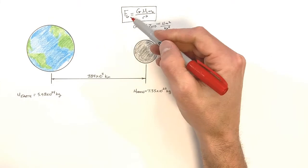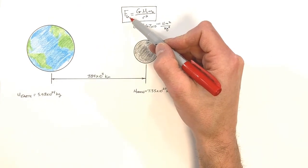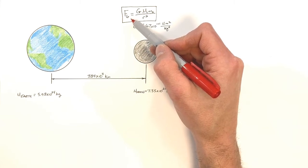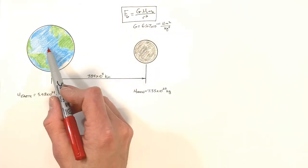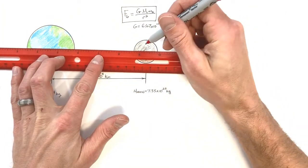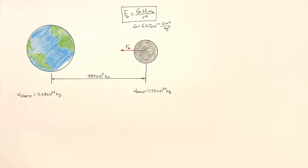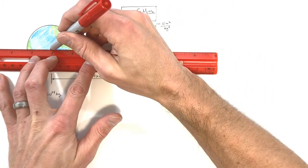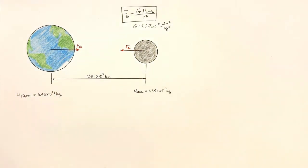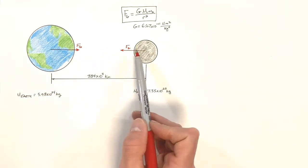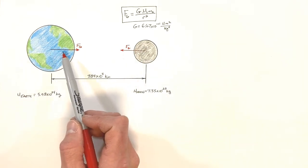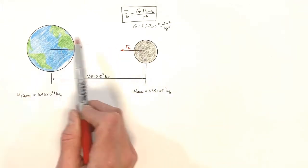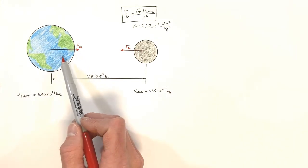This gravitational force obeys Newton's laws, and most importantly Newton's third law: for every action force there's an equal and opposite reaction force. That is to say, if the earth pulls on the moon with some gravitational force, then the moon pulls on the earth in the opposite direction with this same amount of force. It's a little non-intuitive — people think that because the earth is so much more massive, it must be pulling harder on the moon. But that's just not true.